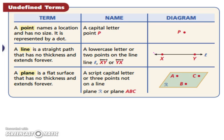A line is a straight path that has no thickness and extends forever. You can label it with two points. Notice those points are uppercase letters, or you can use a script lowercase letter. In this case they used a script L.